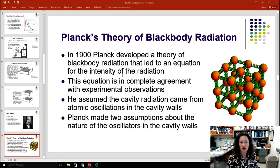Here's Planck's model, his theory of black body radiation. Now, he developed this model in 1900. The theory that led to an equation for the intensity of the radiation that matched the experimental results from a black body radiator. So, this equation is in complete agreement with experimental observations, even still to this day.